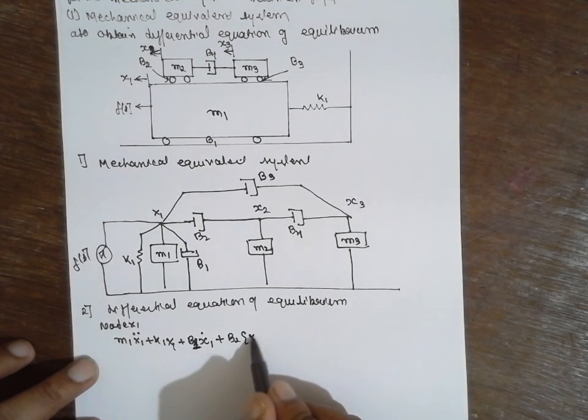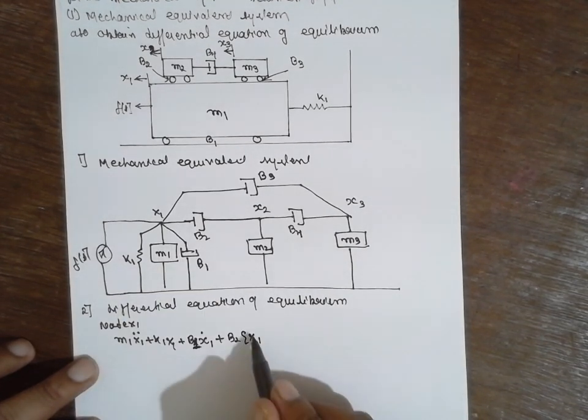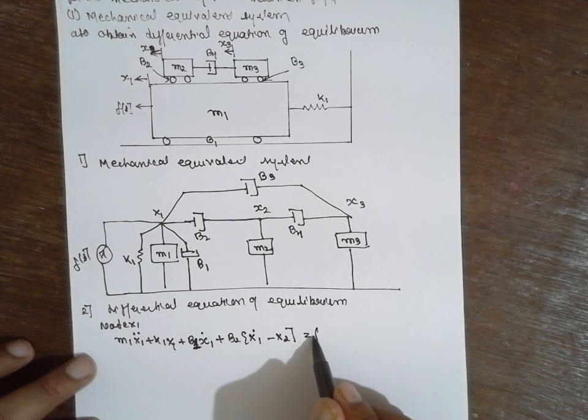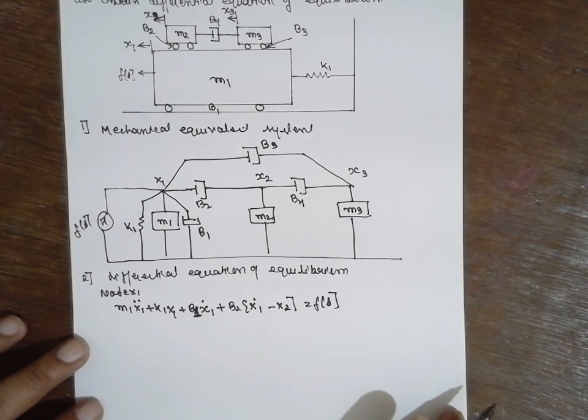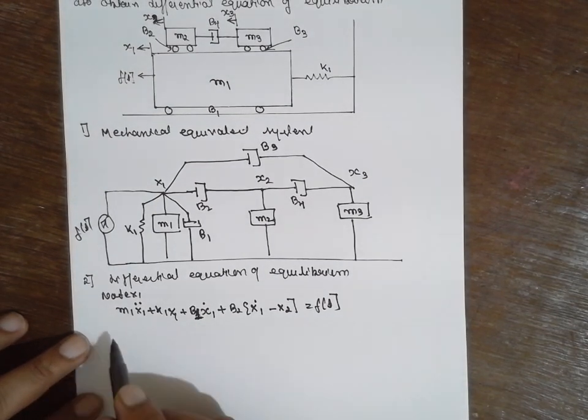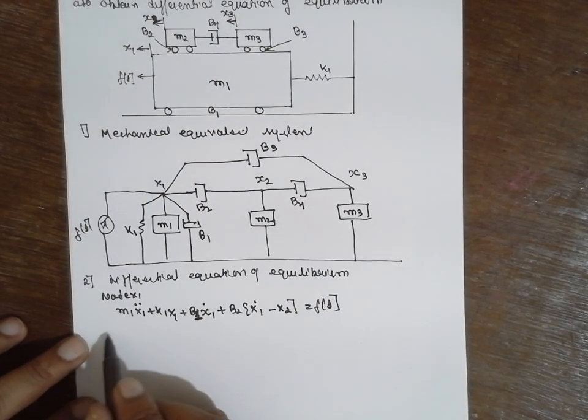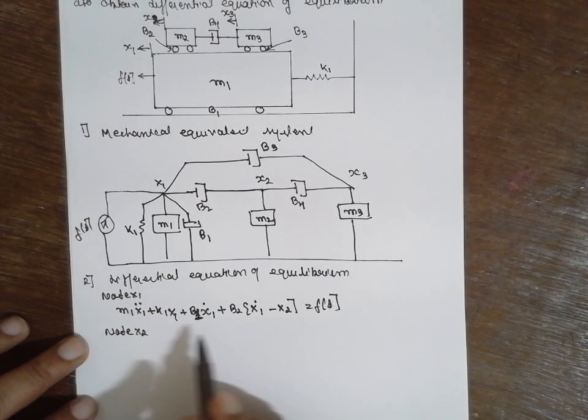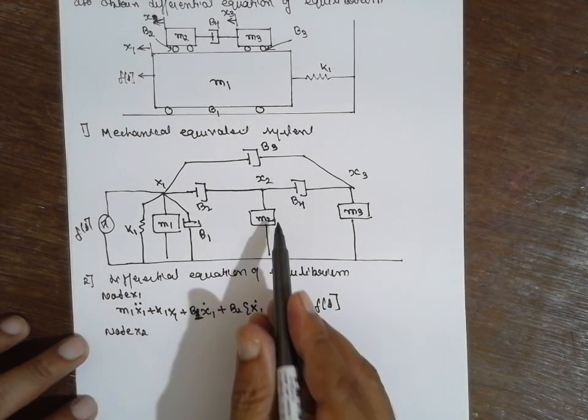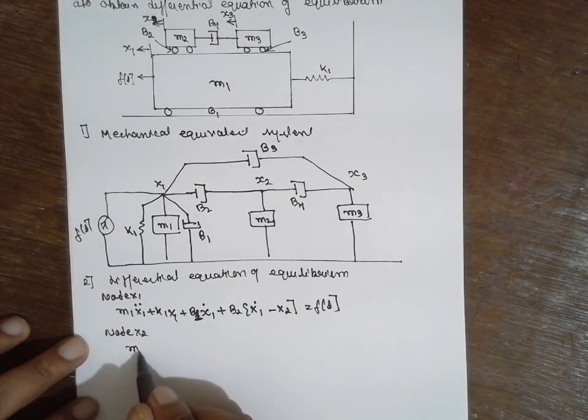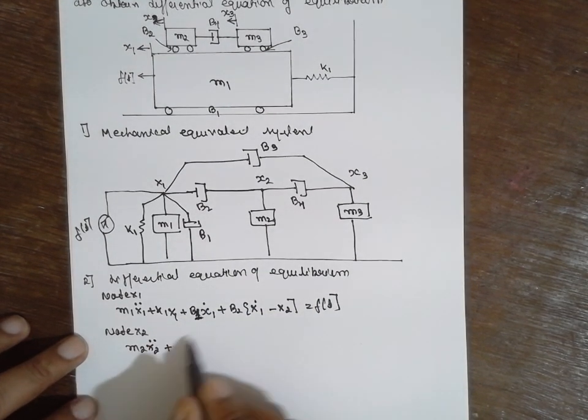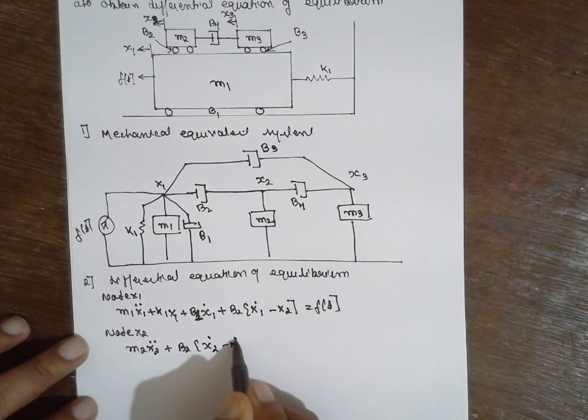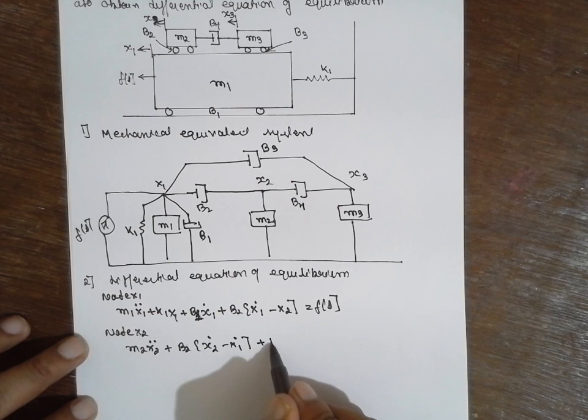Next, node X2: m2·ẍ2 + b2·(ẋ2 - ẋ1) + b4·(ẋ2 - ẋ3) = 0.